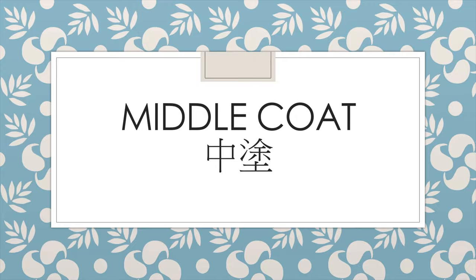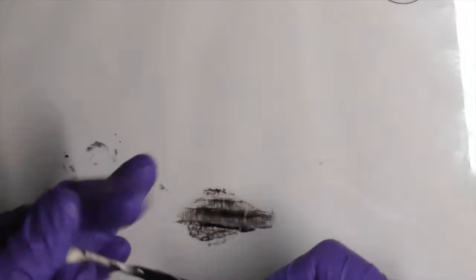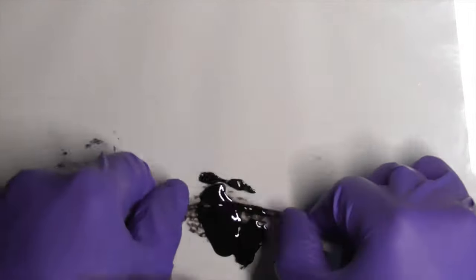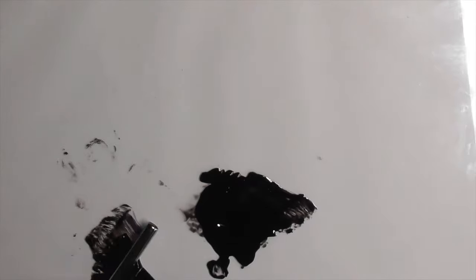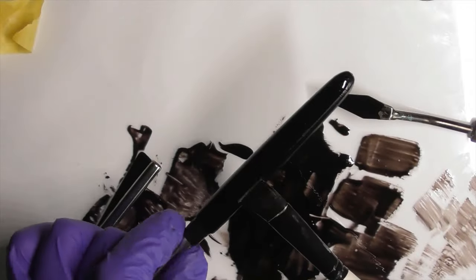The middle coat is simply 2 coats of black Urushi. Step six, fold another piece of sin yashino paper twice to create a 4 layer filter. Then filter the black Urushi. Clean the brush at step four and paint the first middle coat on the pen.